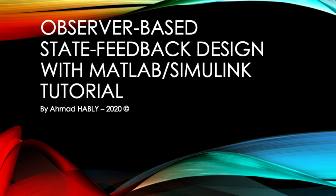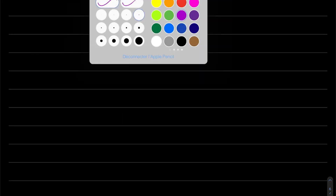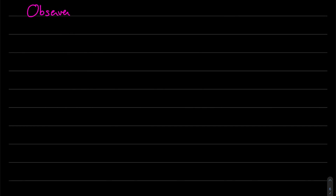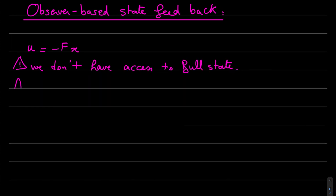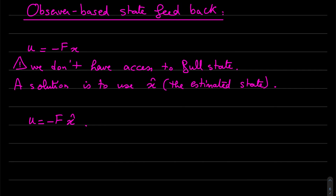Here is Ahmad and here is a new video on observer-based state feedback design with MATLAB Simulink tutorial. Observer-based state feedback design is the combination of the first two videos, so u equals minus Fx. The problem is we don't have access to all the states, so a solution is to use the estimation of x obtained by the observer, so u equals minus F*x_hat. Let us see if this will work correctly.